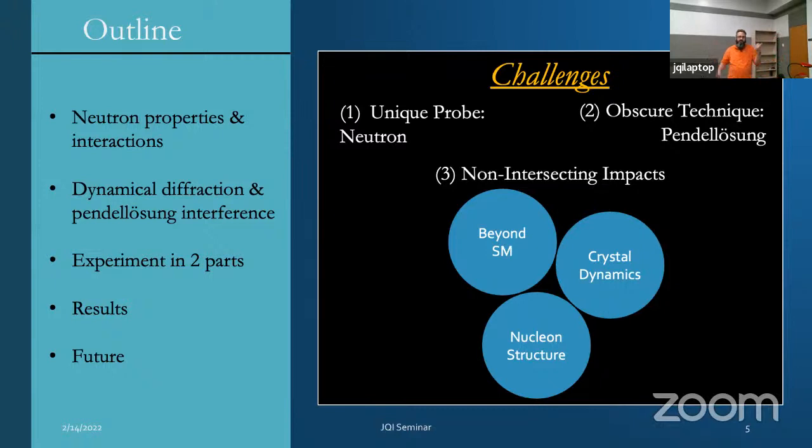I will say it's very challenging to talk about this. The challenge is: one, it's a unique probe - a neutron, which is not familiar to a lot of people. It's not electrons, not X-ray scattering, not atomic fountains. The other thing is it's a really obscure technique - pendulösung interference. Even within neutron scattering, this technique is not used. And then the third challenge is the challenge of impact. The impacts are sort of broad: beyond the standard model searches, crystal dynamics and phonon scattering, and nucleon structure.